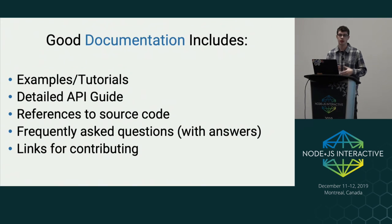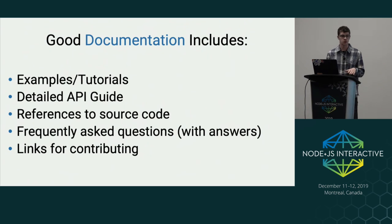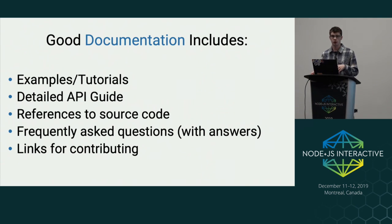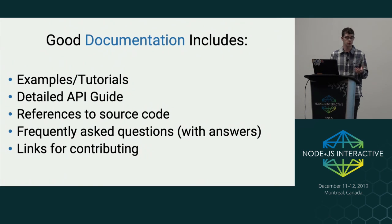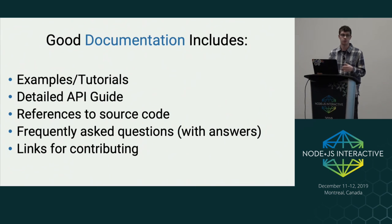Frequently asked questions go hand in hand with examples and tutorials. Users will often hit the same problem cases, and if you can answer those before they open a new issue, that decreases their friction. Finally, links for contributing — the whole type system wouldn't be where it is without open source contributions. If you're using the types and find an error, it's best to open an issue or even better submit a PR. Making that an easy process — saying 'find something wrong, come here and contribute' — helps a lot instead of users having to dig around your GitHub to find where to open a valid issue.